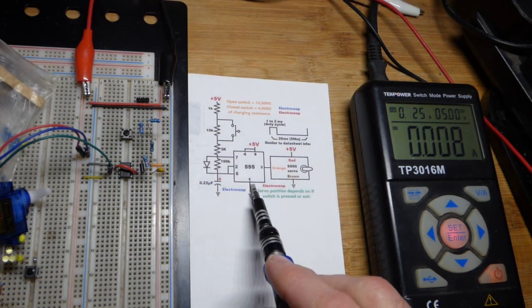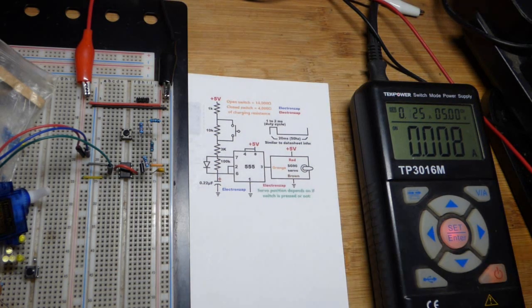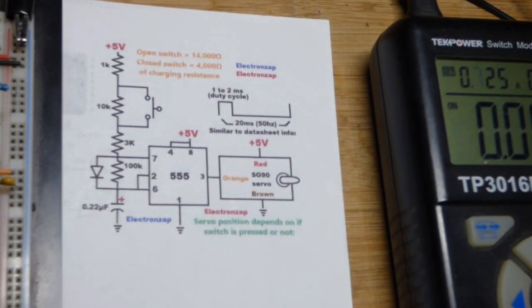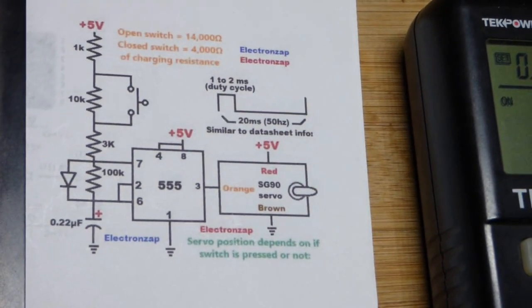Here's the schematic for our servo that has two positions based on whether we're pressing the switch or not. I'm using the SG90 servo.